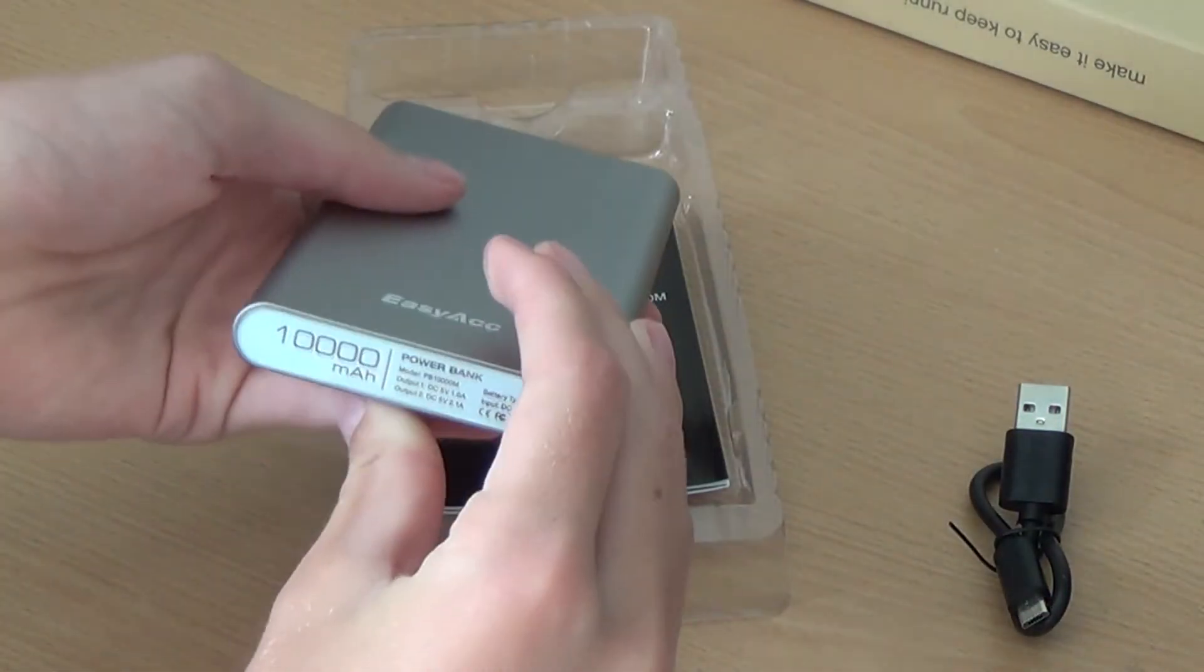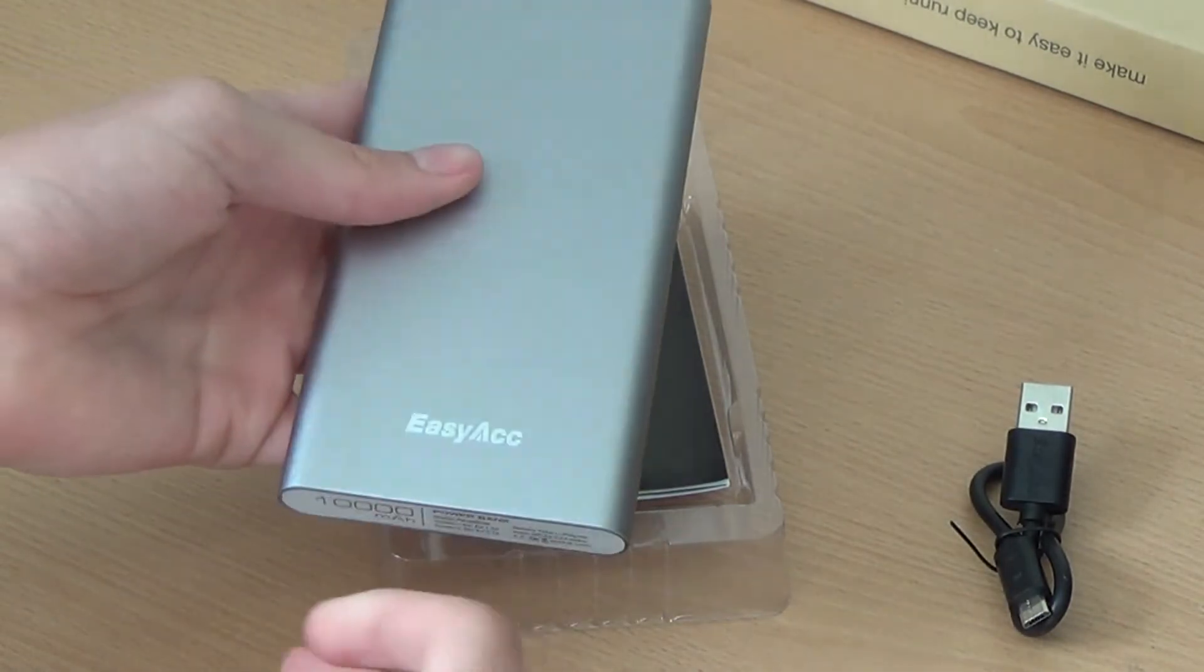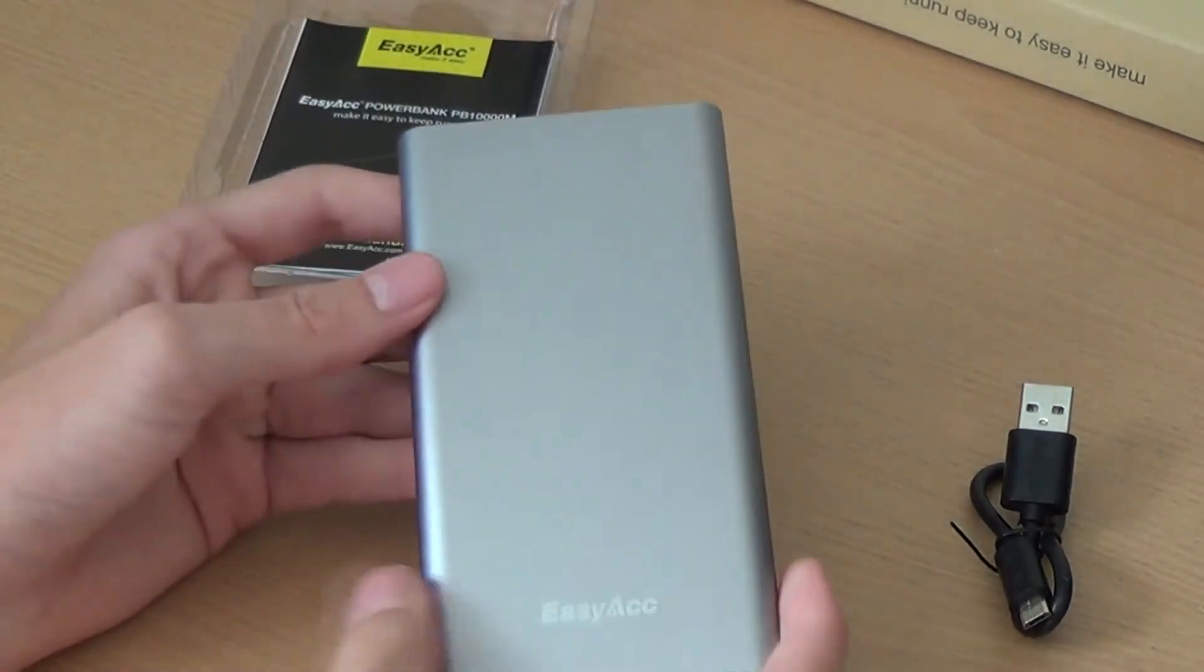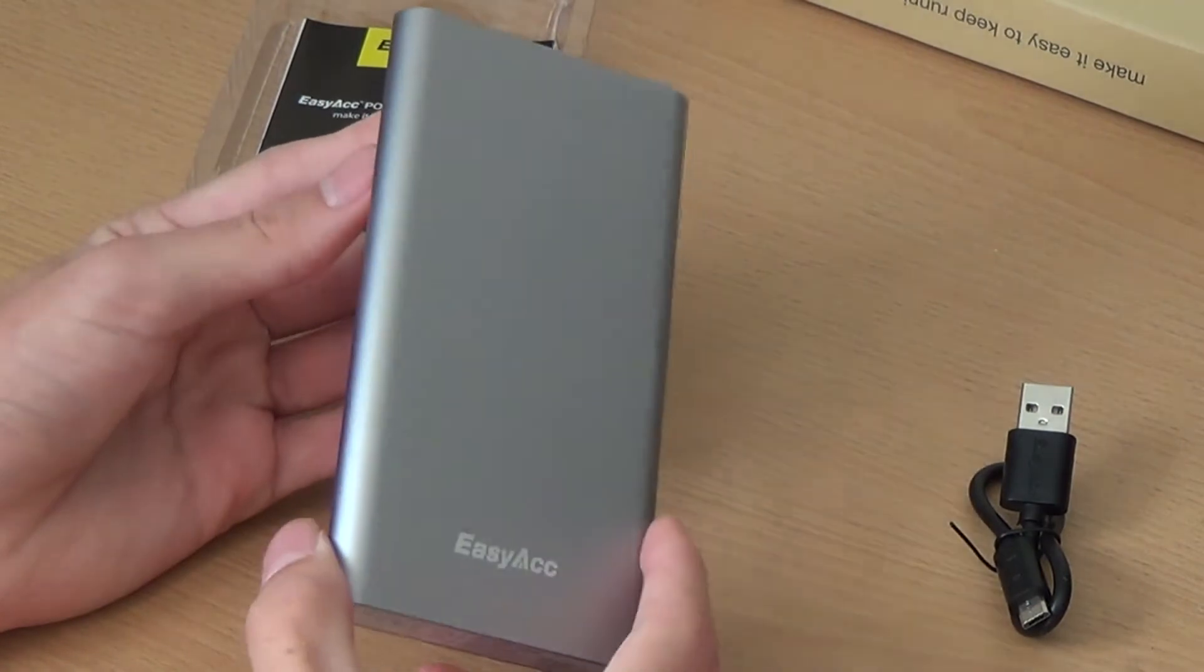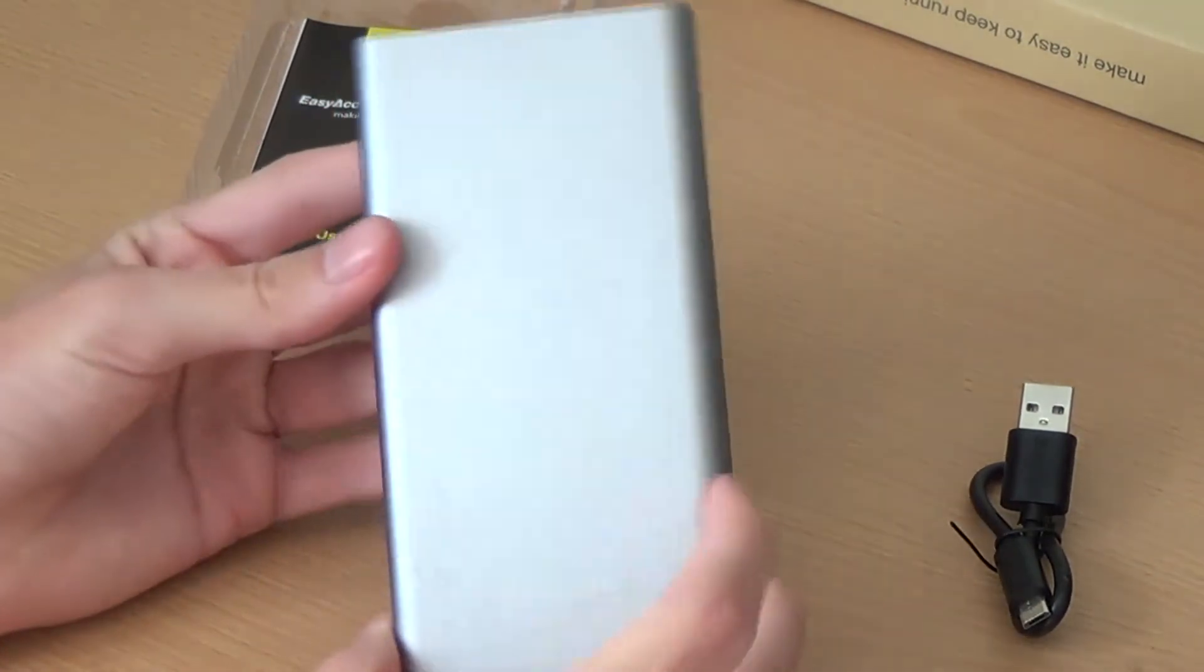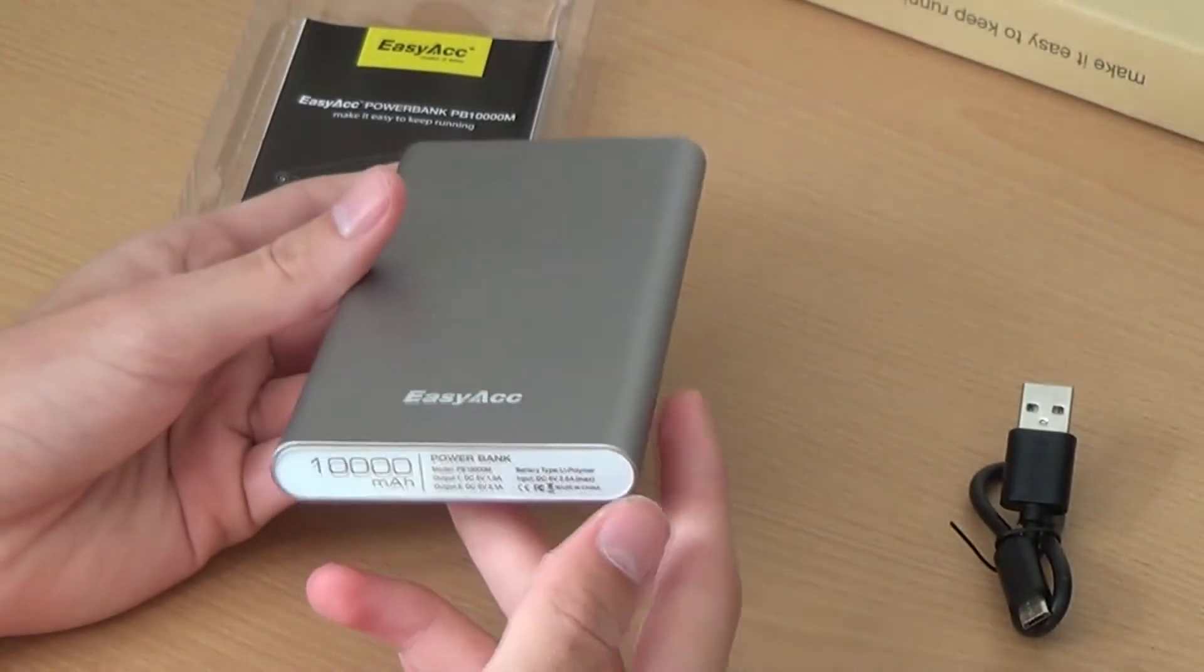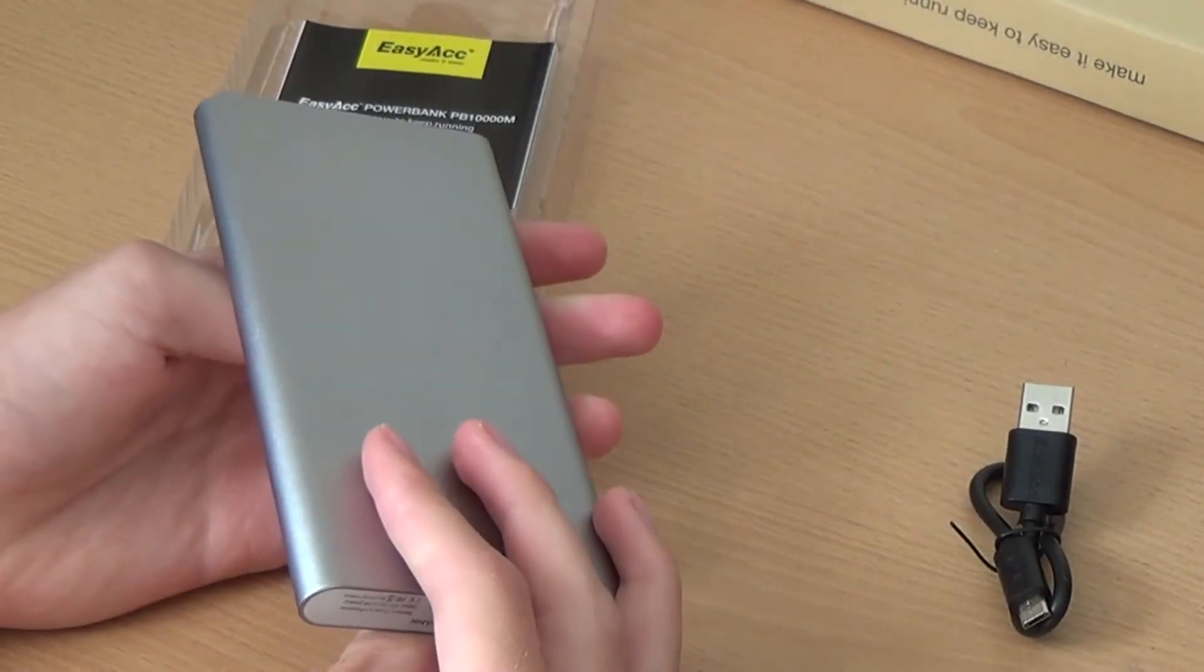I know I said in my last power bank review, the Anker one, that I didn't like colored products with power banks and stuff. I don't like the fanciness, but this silver kind of works. I don't know why, but it just works. It's got the white with it as well. But overall, it just looks quite stylish, and that is really what you want in a product.